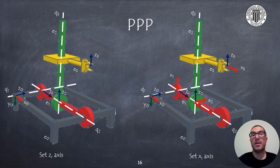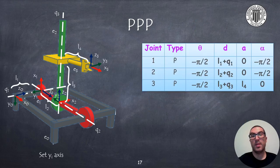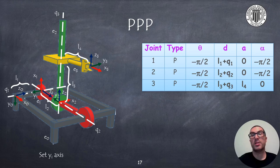The next thing to do is to set the direction of the Z axes, as shown in the figure on the left. Then we set the direction of the X axes, always perpendicular to Z_i and Z_{i-1}. X3 in this case could have been chosen with any arbitrary direction as long as it is perpendicular to Z3, because Z2 and Z3 are parallel. But I decided to select that specific direction so that X0 and X3 are pointing in the same direction. Finally, we set the Y axis following the right-hand rule and obtain the Denavit-Hartenberg parameters as shown in the table. As you can see, there are many parameters different from 0 because of my preliminary decision for selecting the position of reference frame 0.